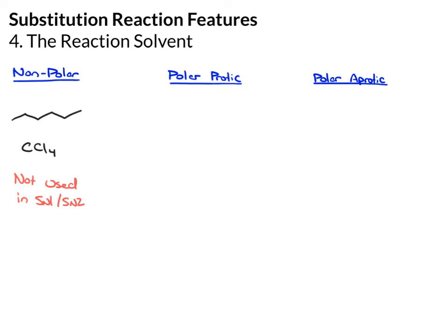The next class are polar protic solvents. A polar protic solvent is, one, a polar solvent, but two, the protic portion means that in the structure you have an OH or NH bond — so basically there's hydrogen bonding in the solvent. Some examples are water, an alcohol like methanol, a carboxylic acid because that has an OH, and an amine. Those are all polar protic solvents.